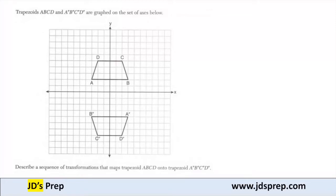Hello, welcome to JD's prep. In this example, trapezoids A, B, C, D and A'', B'', C'', D'' are graphed on the set of axes below. What we want to do is describe a sequence of transformations that maps trapezoid ABCD into the other trapezoid A'', B'', C'', D''.